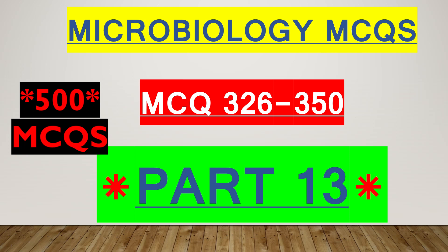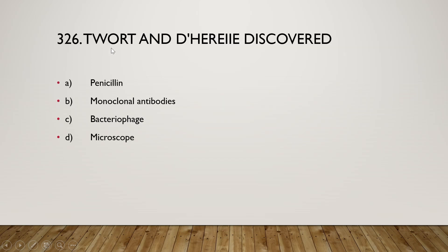Hello friends, today in this video I am going to discuss MCQs on general microbiology. This is the 13th part of the series of 500 MCQs on microbiology. Let's start the question-answer session on general microbiology with detailed explanation. The first question is: Twort and d'Herelle discovered penicillin, monoclonal antibodies, bacteriophage, or microscope?